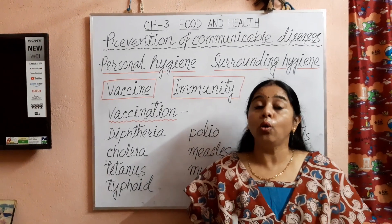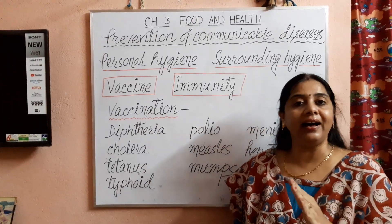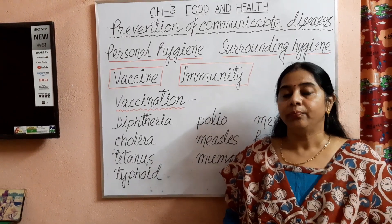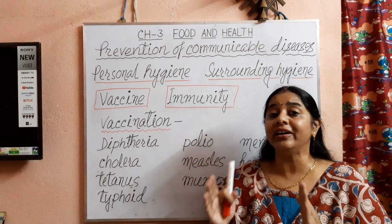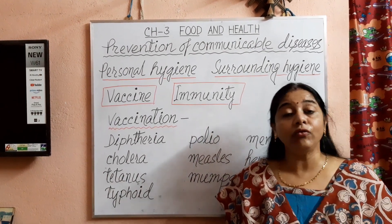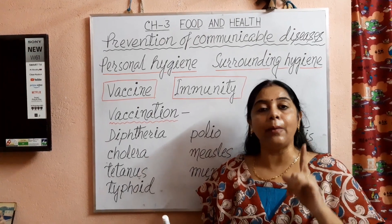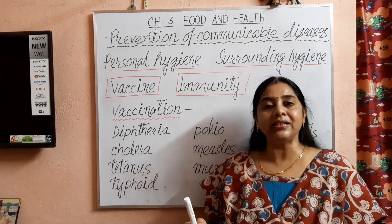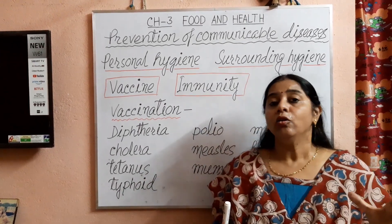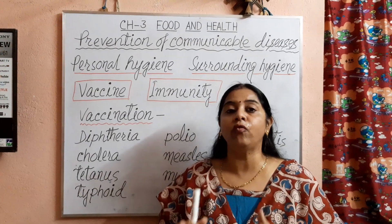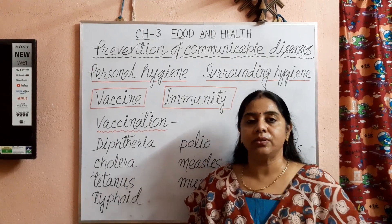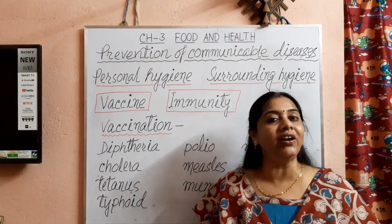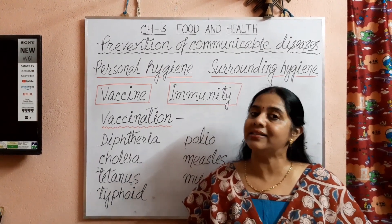The next point is we should not throw garbage here and there in the surrounding of our house. We should always dump the garbage in covered dustbins. As all of you know, a heap of garbage is the breeding place of flies. Flies carry germs from garbage and contaminate our food and water. When we intake that contaminated food and water, we suffer from diseases like cholera, jaundice, diarrhea, dysentery, etc.